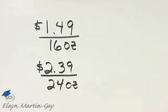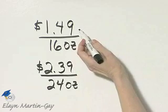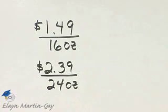Here we're going to compare prices, and we want to know which one is the better buy, so we'll find the unit price. Notice I've written this rate as a fraction. 16-ounce size is $1.49. 24-ounce size is $2.39.